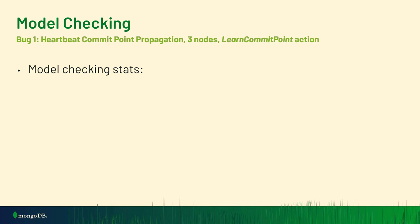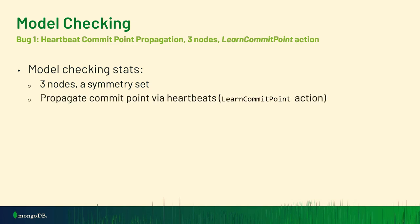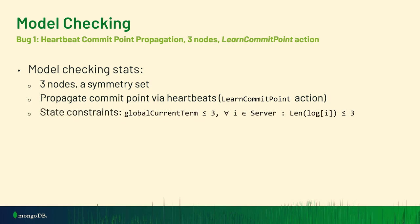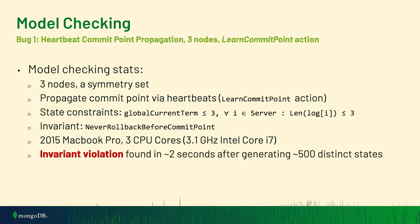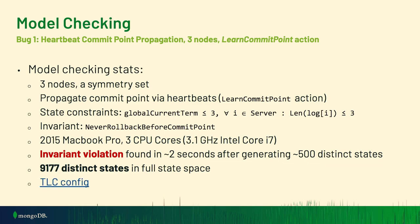Some statistics from the model checking run: heartbeat commit point propagation, early version of the protocol, three nodes in the replica set specified as a symmetry set, propagating commit points via heartbeats. State constraints: term limited to ≤3 and log lengths ≤3. Using the NeverRollbackCommitted invariant. Running on a MacBook — nothing fancy. TLC finds an invariant violation in a couple of seconds, with only around 9,000 distinct states in the full state space.